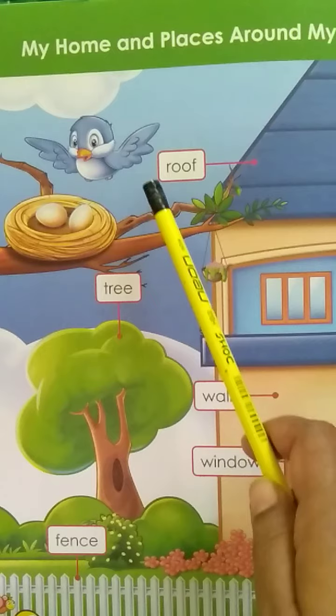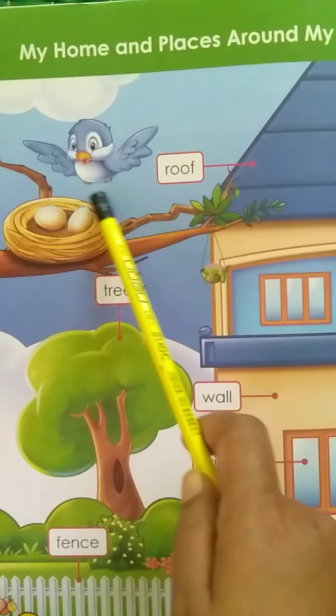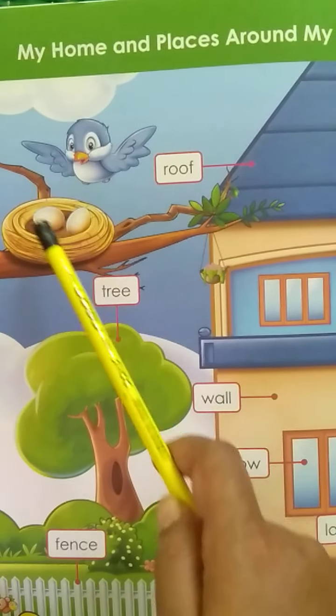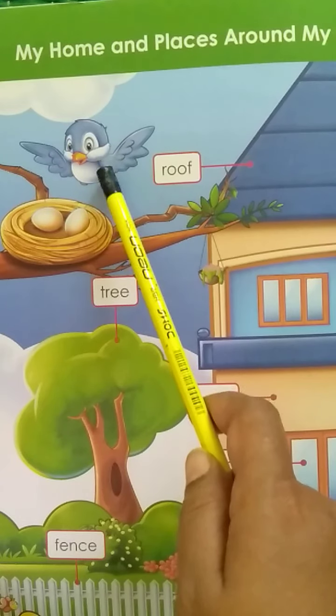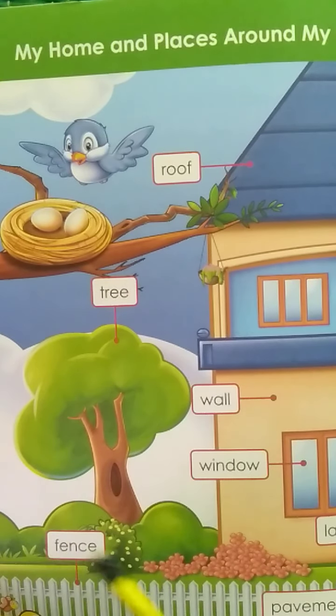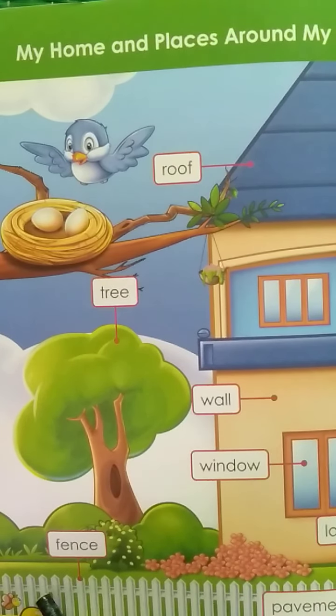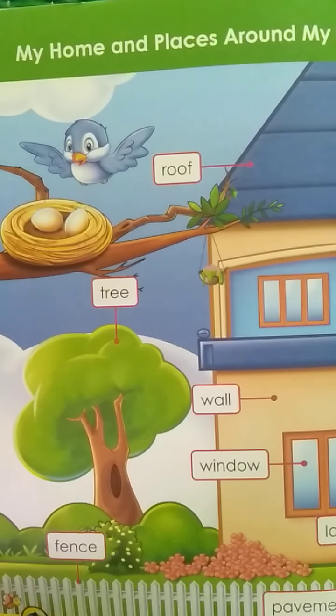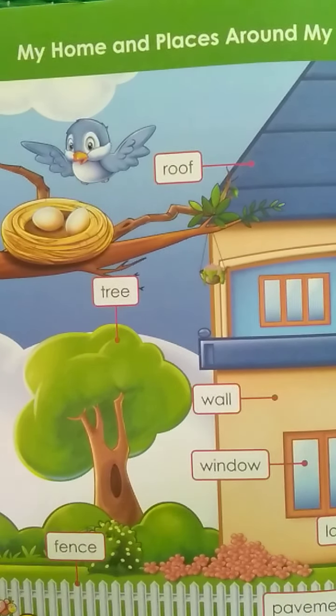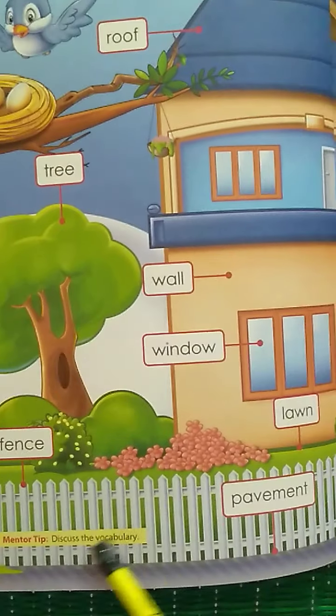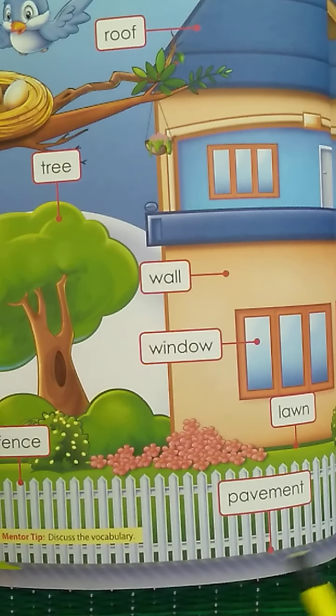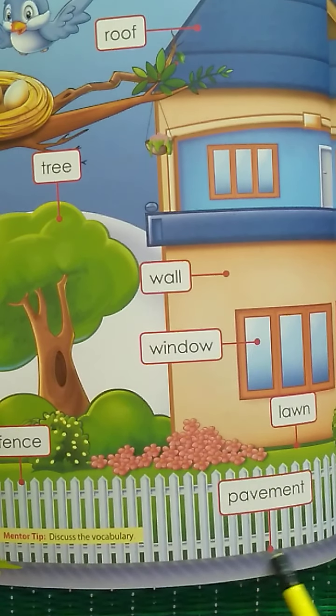And then this is a nest. What is this? Nest. Nest is the place where the birds lay their eggs. And this is called as fence. What is this? Fence. And the area in front of the fence is called as pavement. What is this? Pavement.